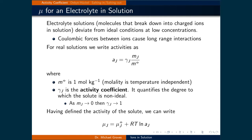Gamma of J is the activity coefficient, and it quantifies the deviation from ideal conditions for the solute. Just as Henry's law would predict, as the molality of component J goes to zero, the activity coefficient of component J goes to one. In real terms, as the system is diluted, the closer it returns to ideal conditions.